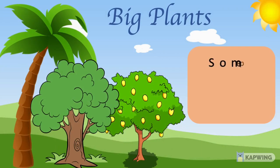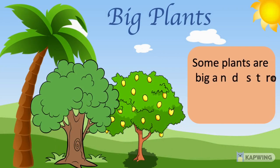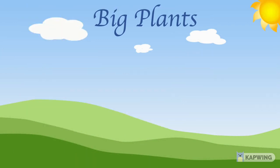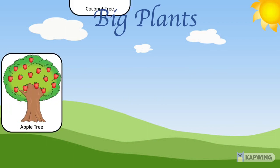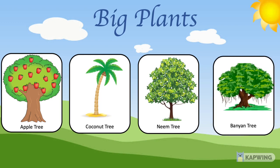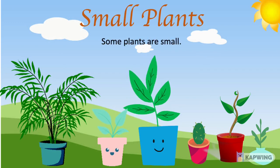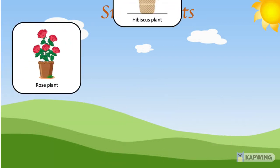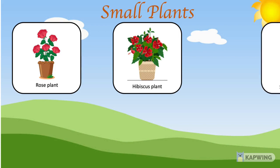Let's learn about big plants. Some plants are big and strong — such plants are called trees. For example, we have apple tree, coconut tree, neem tree, banyan tree, etc. Some plants are small. For example, we have rose plant, hibiscus plant, sunflower plant, mint plant, coriander plant, etc.